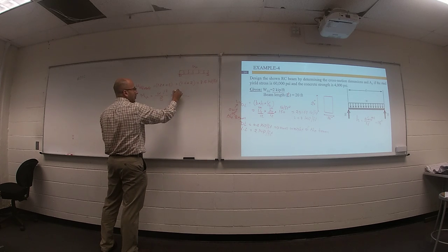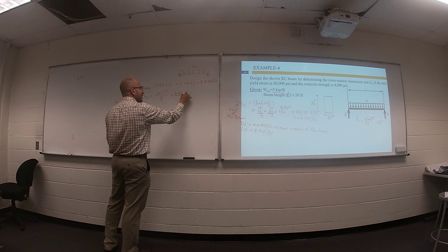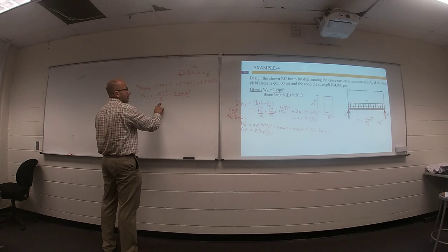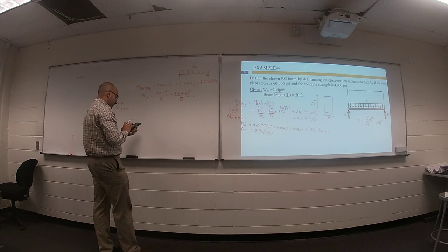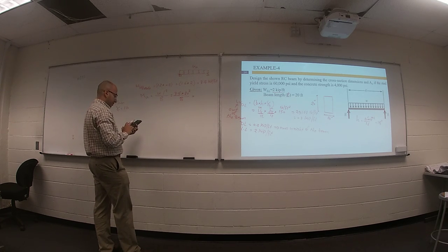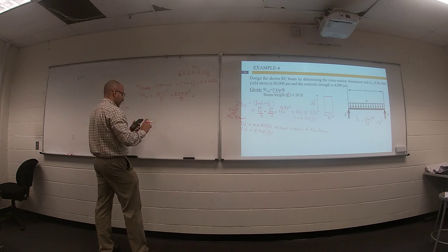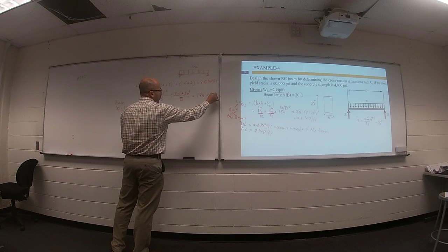Your W ultimate is 3.5, your L squared is 20 squared, divided by 8. Your value will be 175 kip-foot.